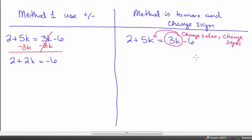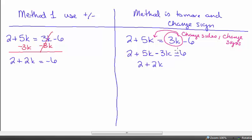Method two is to pick up the term we want to move and just move it, but if we change sides, we change signs. Think of it as switching teams — if you switch teams, you put on a different jersey. So 3k moves to the left side and becomes negative 3k. That gives us 5k minus 3k, which is 2k, equals negative 6. Both methods give the same result.